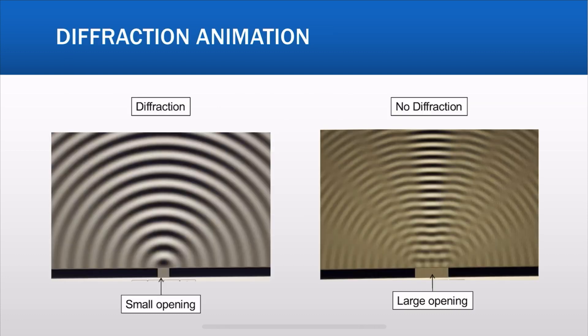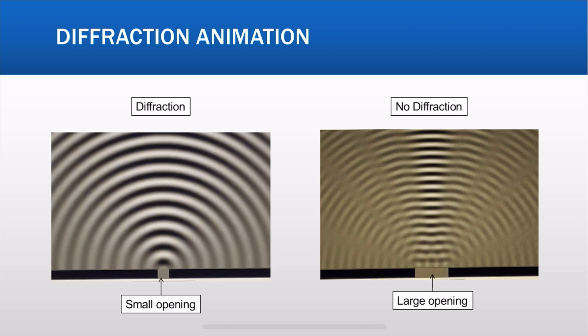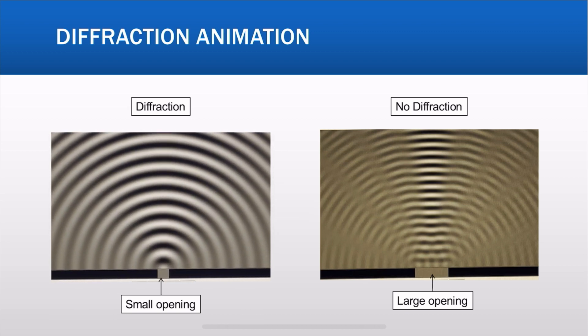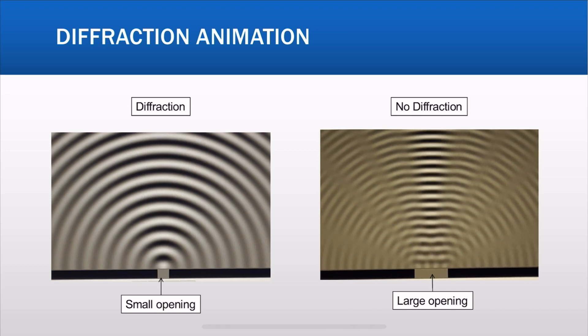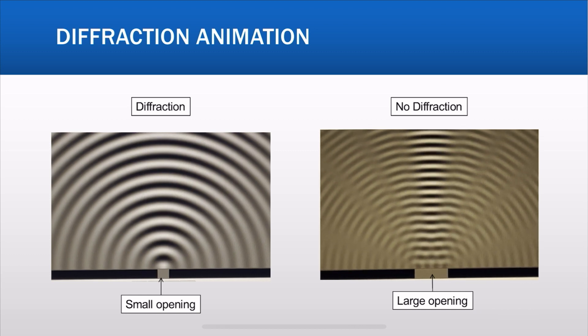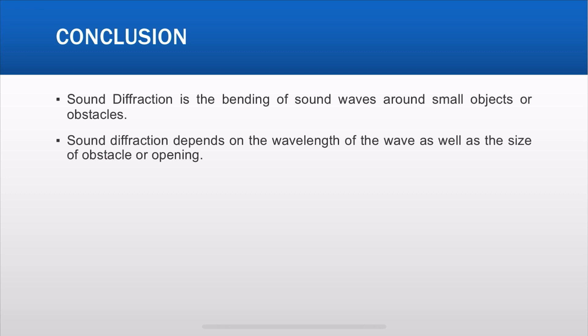Here's an animation of diffraction. On the left side there is a small opening so there is diffraction, whereas on the right side there is a very large opening so there is not much diffraction. You can see the diffraction with the small opening, and essentially no diffraction in the large opening case. To conclude: sound diffraction is the bending of sound waves around small objects or obstacles, and it depends on the wavelength of the wave as well as the size of the obstacle or opening. Thank you very much for watching, I hope you enjoyed it — have a great day.